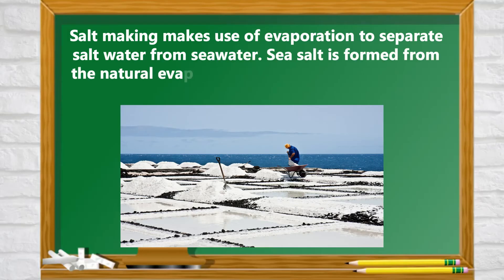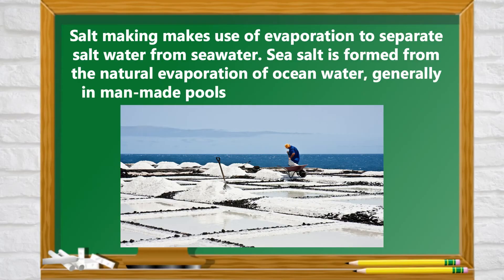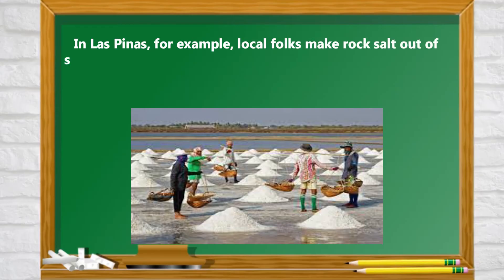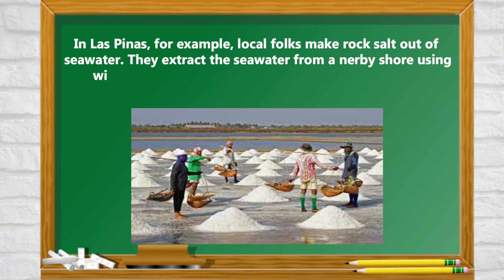Salt making makes use of evaporation to separate salt from sea water. Sea salt is formed from the natural evaporation of ocean water, generally in man-made pools near a protected shoreline. In Las Piñas, for example, local folk crack salt out of sea water.